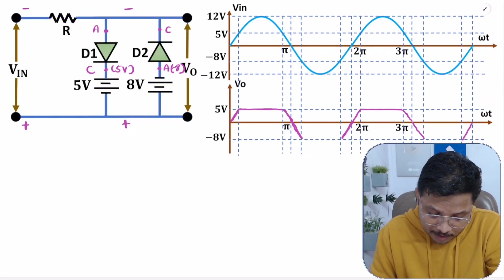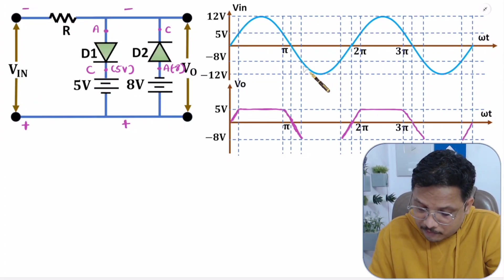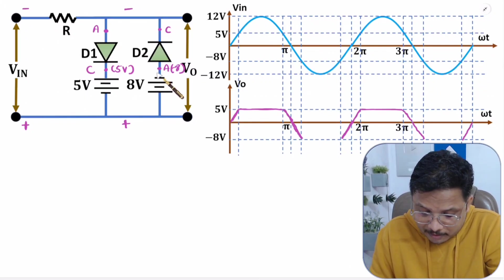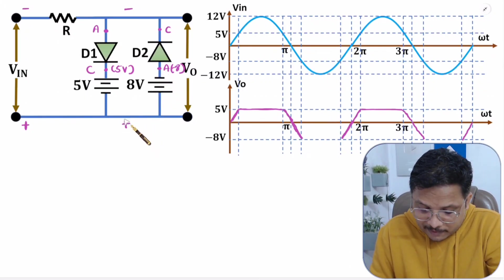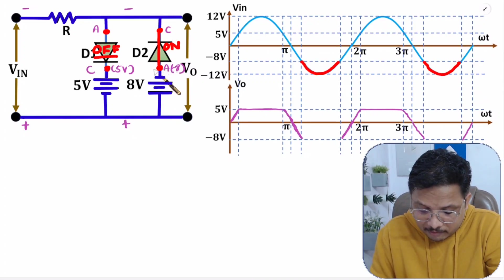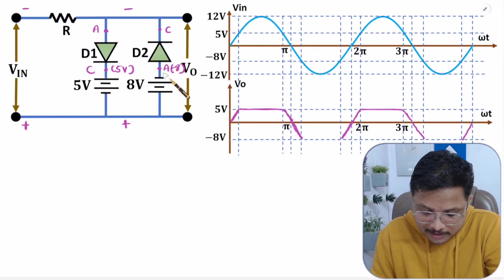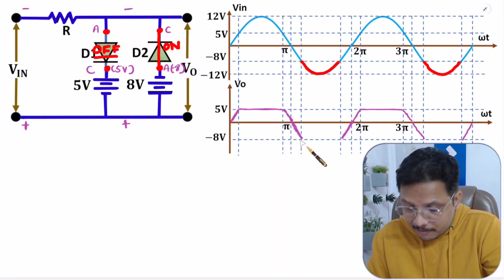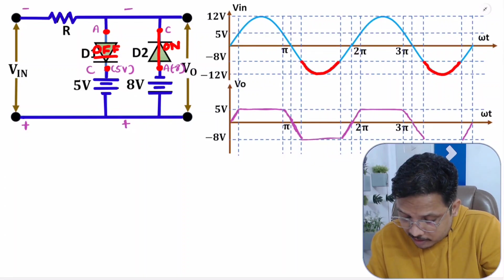If V_in in the negative half cycle goes beyond minus 8V, then the positive portion from the circuit will exceed minus 8V — meaning anode will be greater than cathode, so D2 will be on. As D2 is on, minus 8V of the battery will appear at the output. So output will be having minus 8V over here — this portion of the waveform is being clipped.